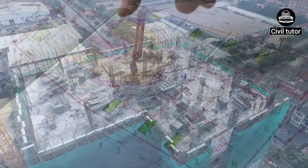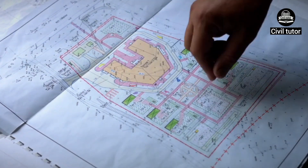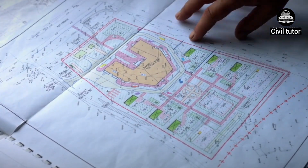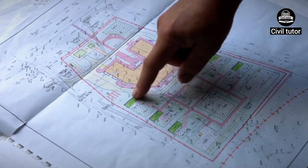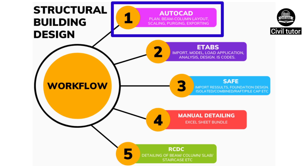How do you approach a given project? How do you create a beam column layout? How do you carry out design and detailing of beams, columns, slabs, etc.? The workflow in carrying out the design of a structure is composed of five important elements, which include the knowledge of AutoCAD, in which we prepare the necessary plan, the beam column layout, scaling, purging, etc.